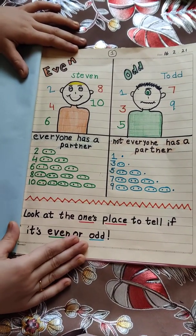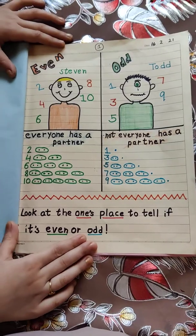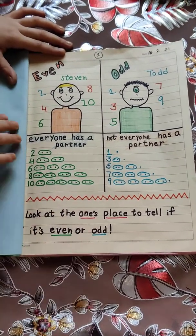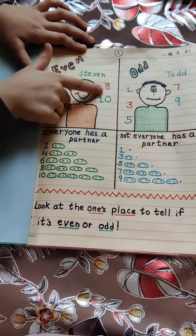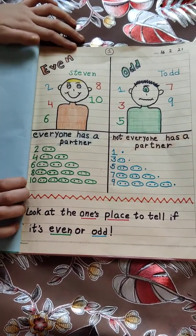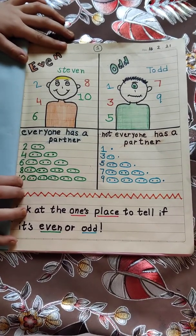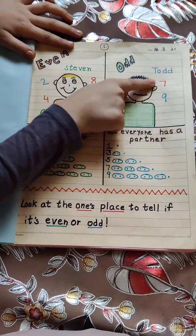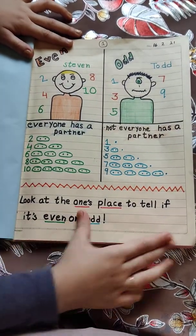If you have a number, first look at the 1's place to tell if it's even or odd. If at the 1's place the number is 2, 4, 6, 8, or 0, the number will be an even number. But if at the 1's place the number is 1, 3, 5, 7, or 9, the number is an odd number.